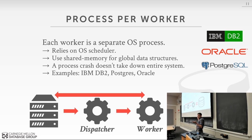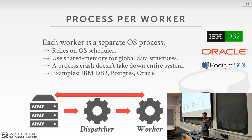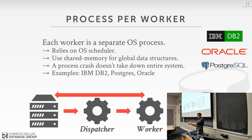Why was process-per-worker the most common approach back then? Because there was no standard threading library. POSIX wasn't as prevalent, there were no pthreads. All the different versions of Unix had their own threading packages. If you wrote a multi-threaded application for BSD and wanted to run it on VAX, you probably couldn't use the same threading package. But the basic concept of a process existed across all these different operating systems — that's why most of those systems were implemented this way.